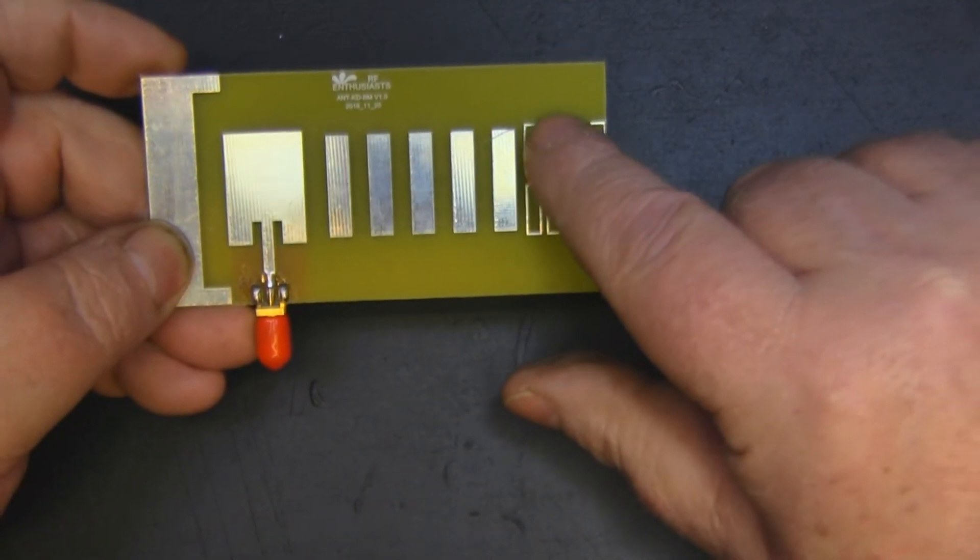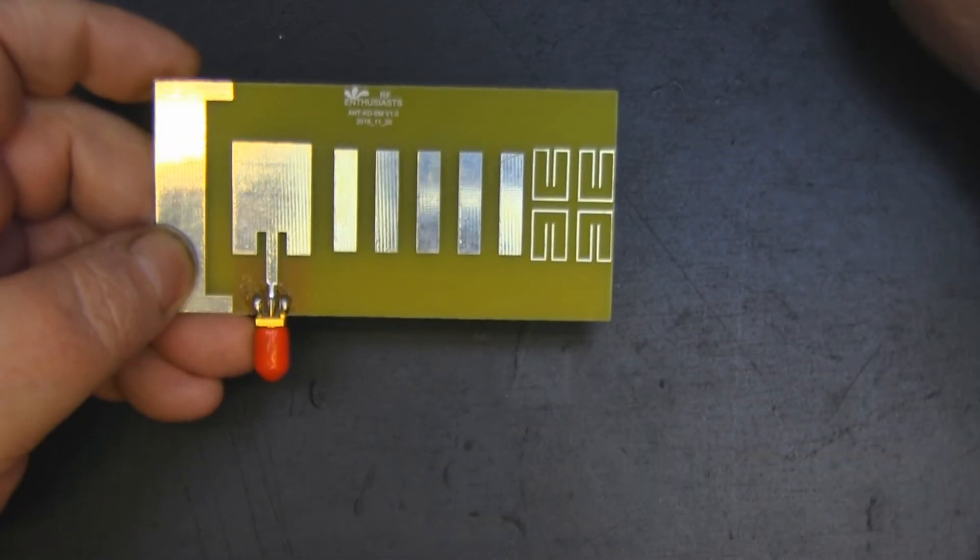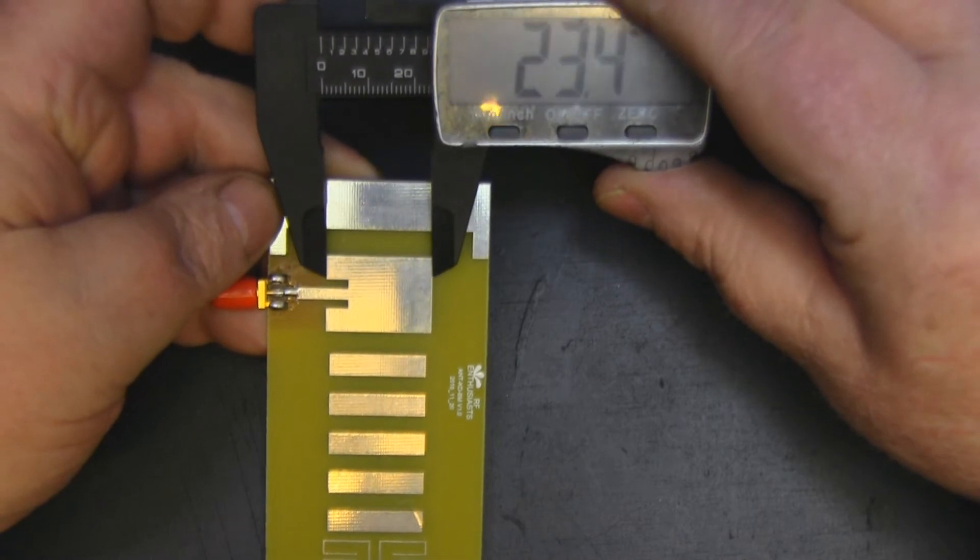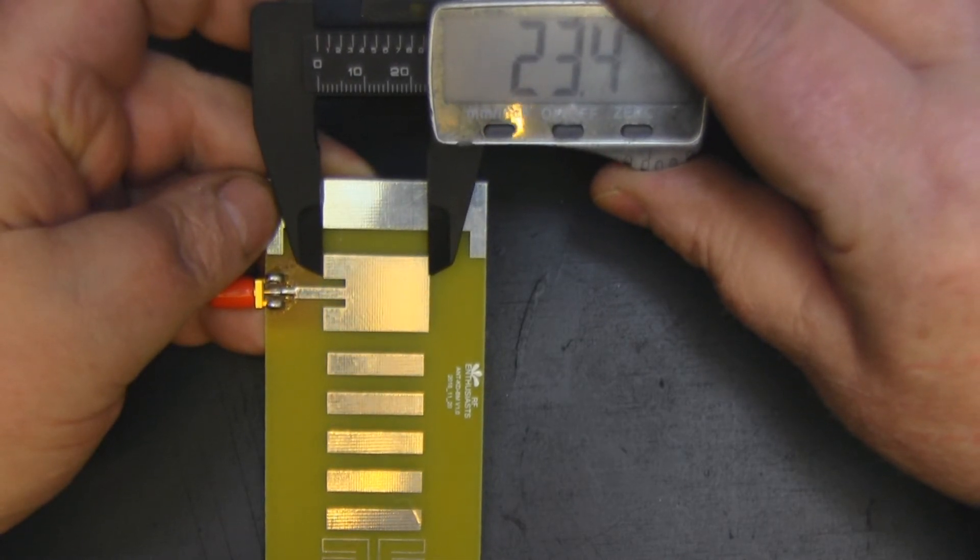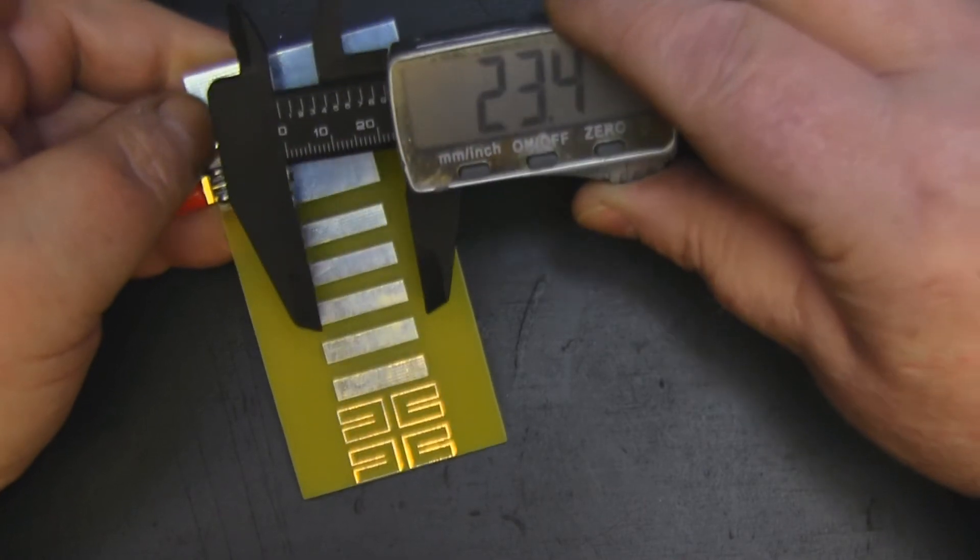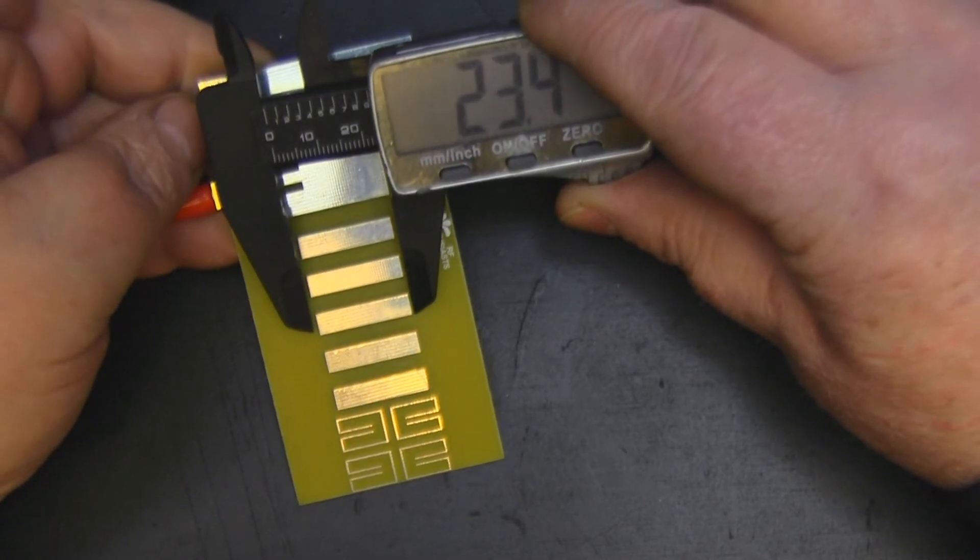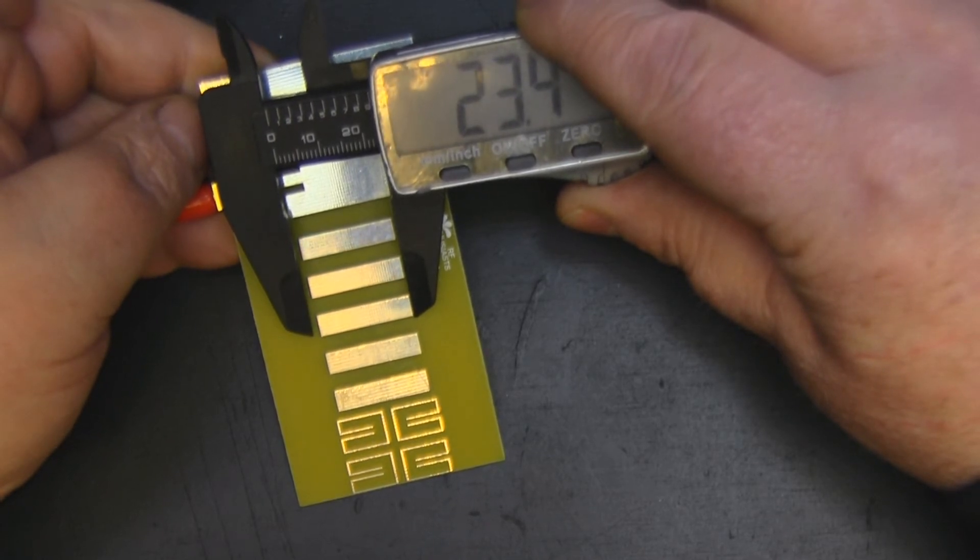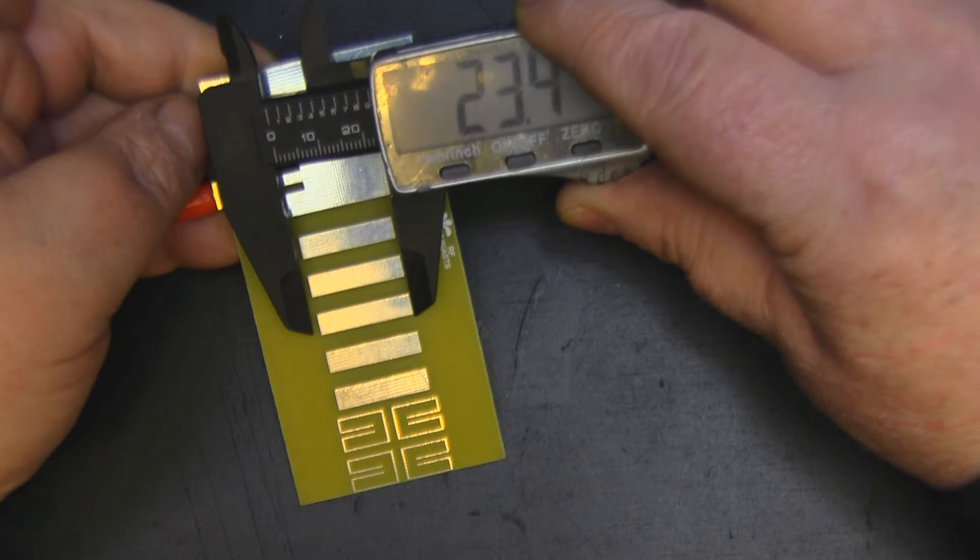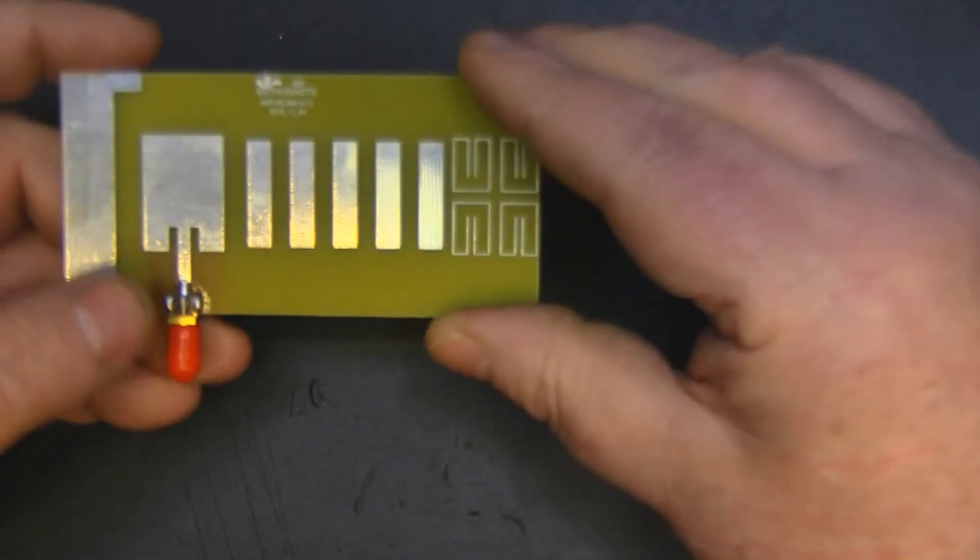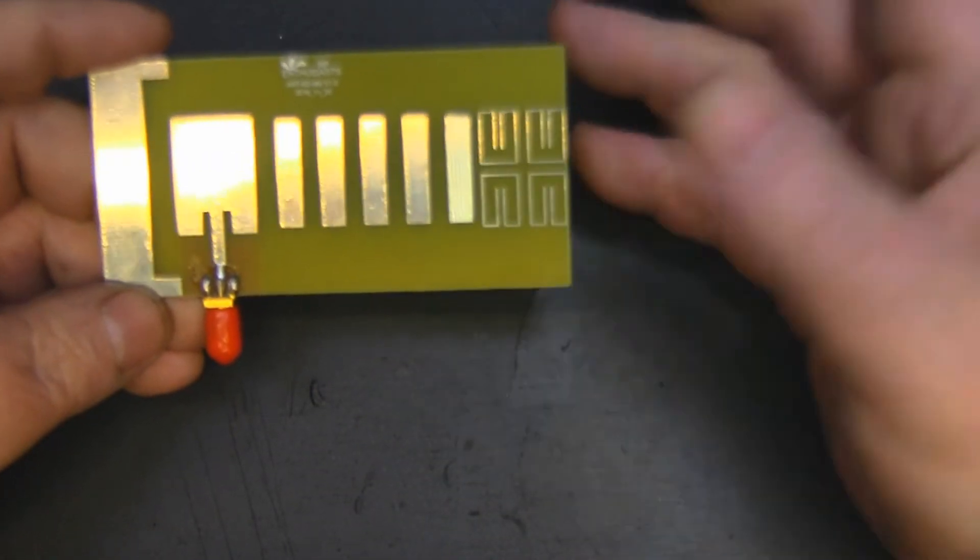These are the same length as the patch antenna itself. The patch antenna is 23.5 millimeters and these are also 23.5 millimeters. If you have a look at the parasitic elements, they are slightly shorter. I've made a pdf for this, I think off the top of my head they were about 22 millimeters, but don't quote me on that.